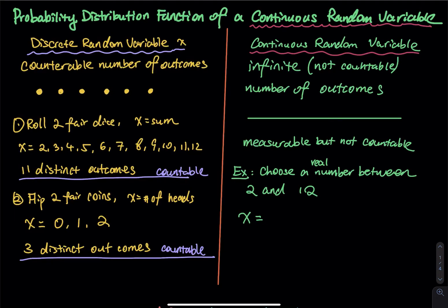In this green line, can you tell me how many dots are in there? The answer is infinitely many, because a line is constructed by putting infinitely many dots together. It is impossible to count the number of dots, but it is possible to measure the length of this line. For a continuous random variable, x is measurable but not countable. You can use a ruler to measure how long the line is, but you cannot point at the line with your finger and tell me how long it is.